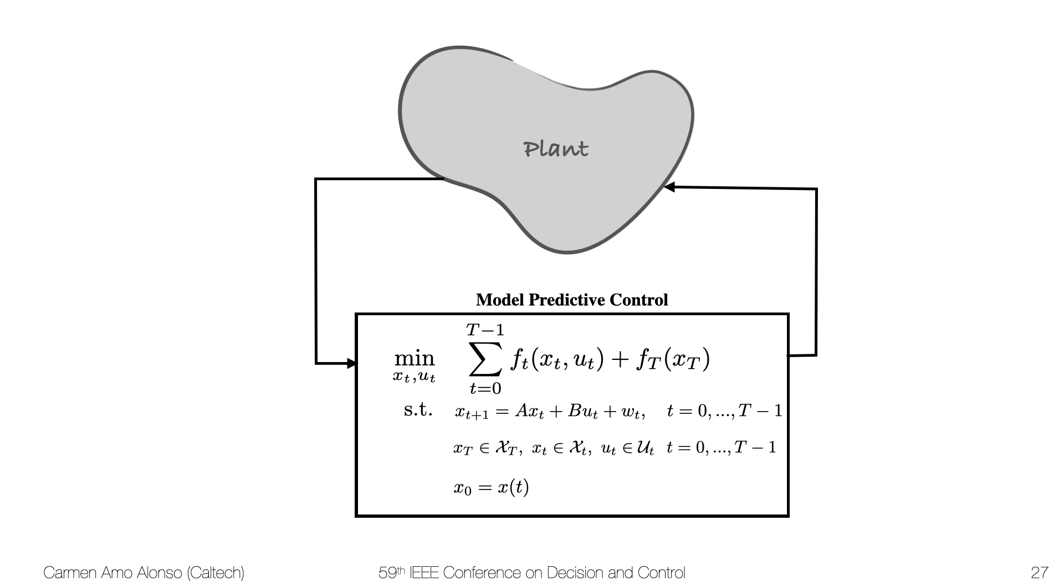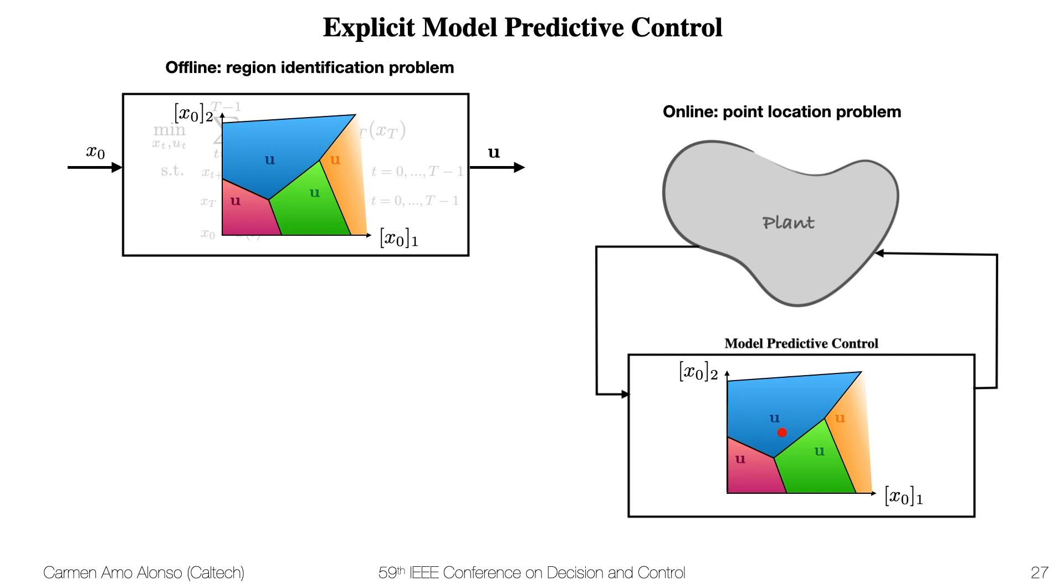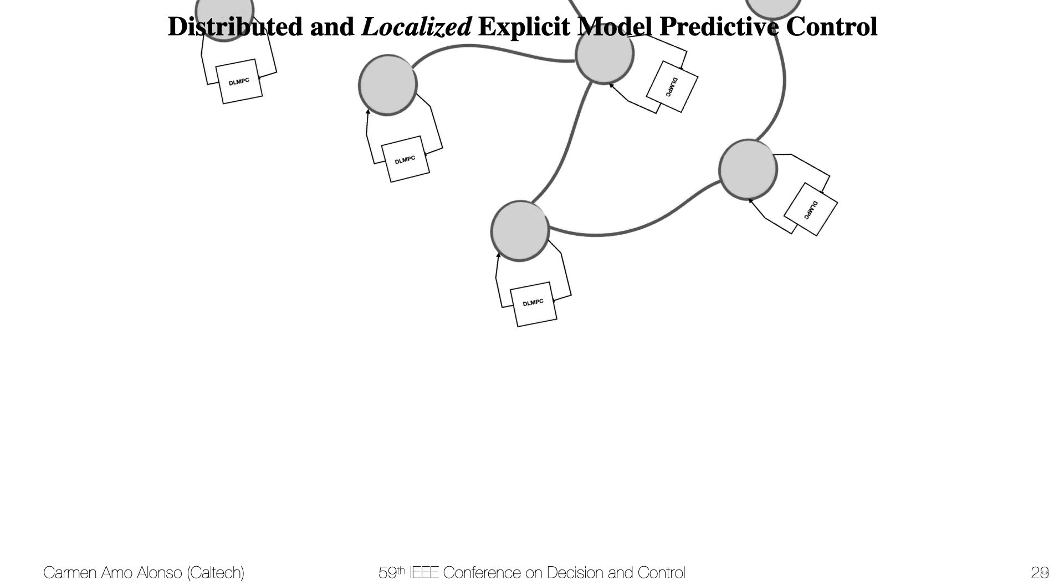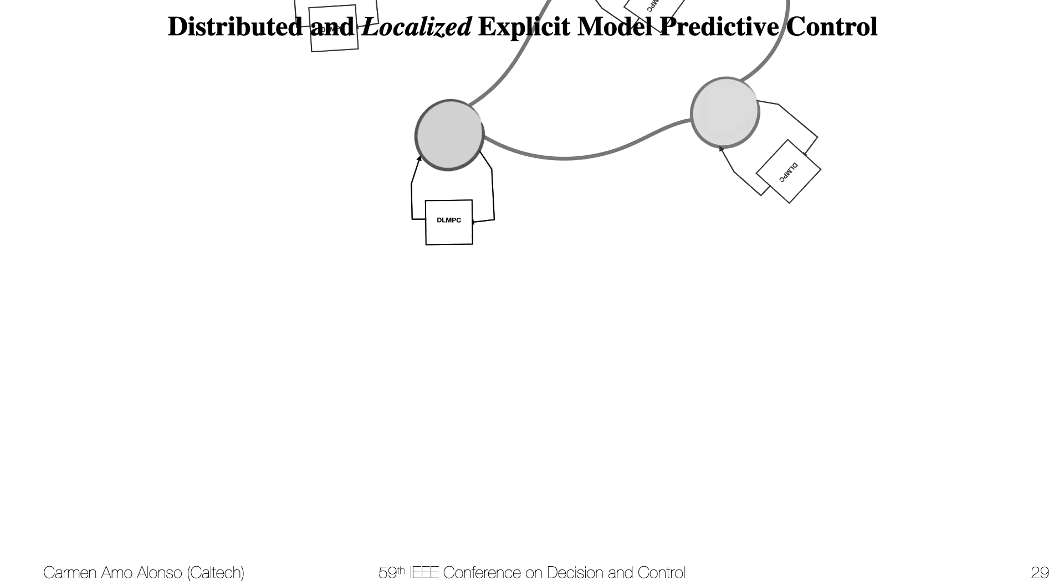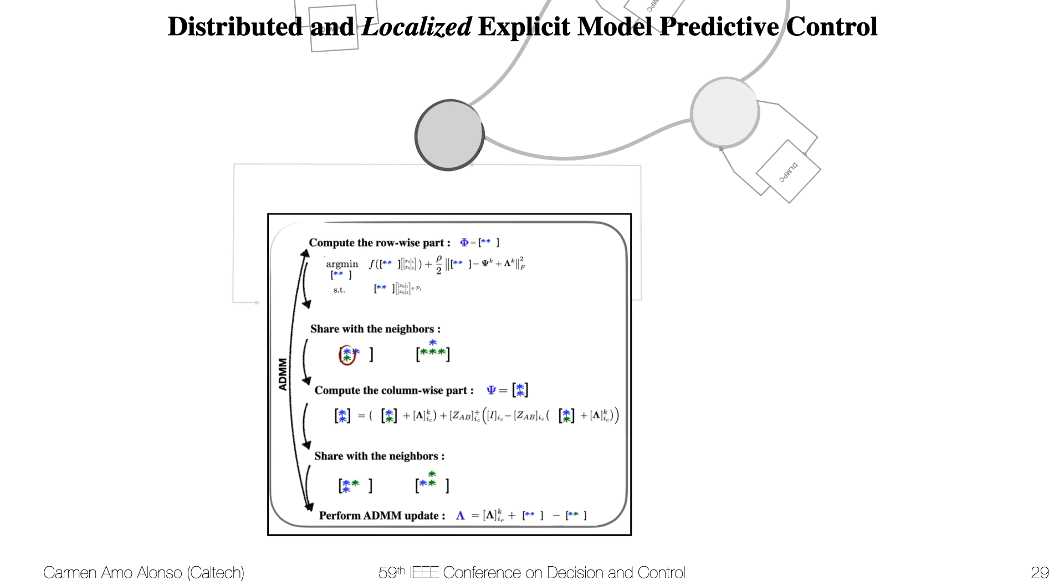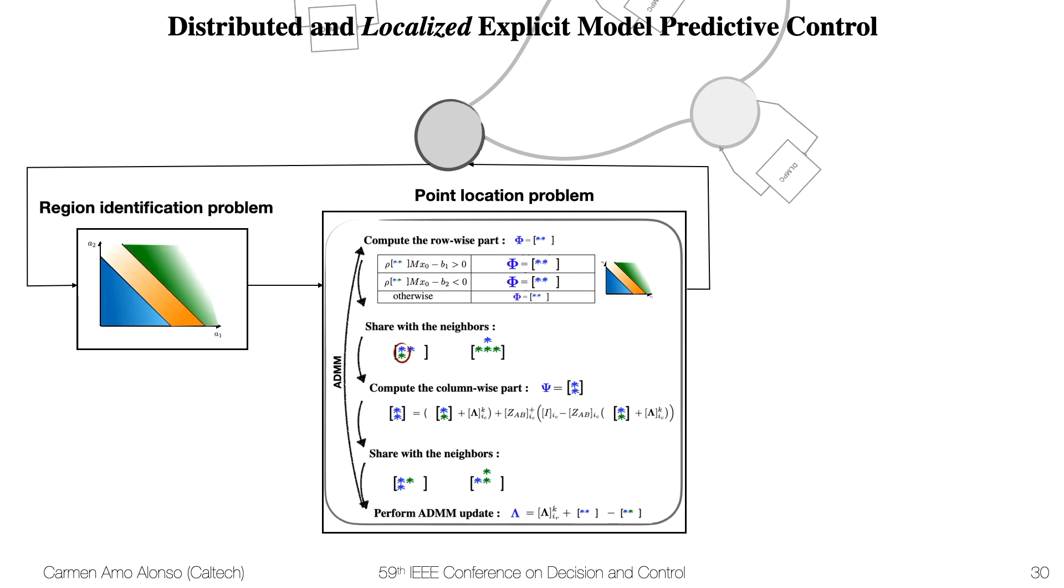And just to recap, the principle under explicit MPC is that we're able to move most of the complexity offline. In our case, unfortunately, we cannot move most of the complexity offline because the subsystems need to constantly exchange information. But instead of having the synthesis algorithm, we propose something of this sort, where we perform the point location problem within the ADMM and the region identification problem we only solve once per MPC iteration. Notice that this is simple to solve since we only have three regions for each row of φ. As we saw in simulation, this greatly reduces runtime.